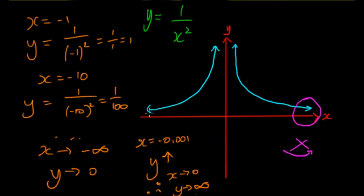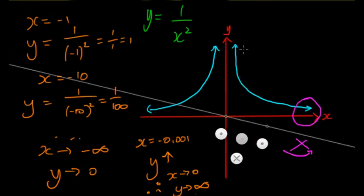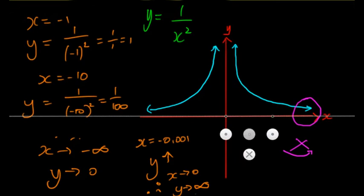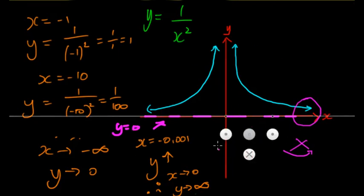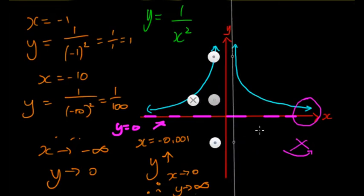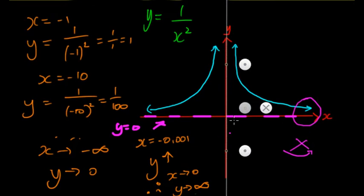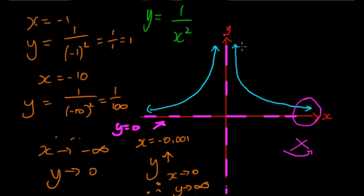Because this graph approaches the x-axis very closely, there is an asymptote at y = 0. And because the graph never touches the y-axis — since x = 0 is undefined — there is also an asymptote at x = 0. So we have two asymptotes and this general shape. The Truncus is a bit closer in and steeper than the hyperbola, and it appears symmetrically on both sides.